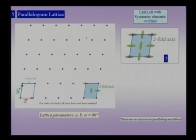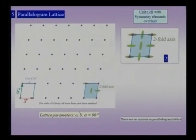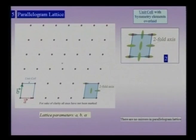The fifth two-dimensional lattice we shall consider is the general parallelogram lattice. In this case there are no constraints either on the lattice parameters a and b or on the included angle. This is the final lattice in two dimensions — the general parallelogram lattice has no constraints; a, b, and alpha can all take any possible values.